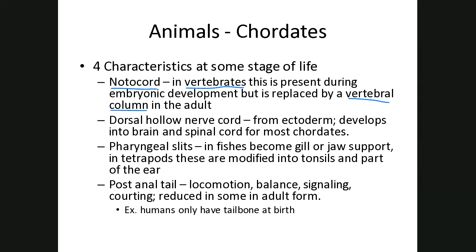Another characteristic is a dorsal hollow nerve cord. We talked about the three germ layers — endoderm, mesoderm, and ectoderm. This nerve cord develops from the ectoderm and eventually becomes part of the nervous system — so brain and spinal cord for most chordates. The third characteristic is called pharyngeal slits.